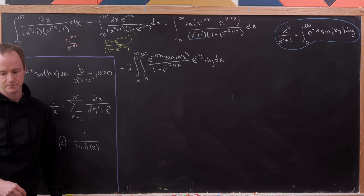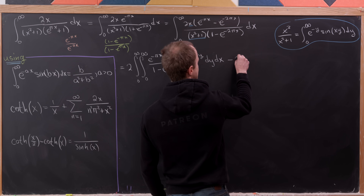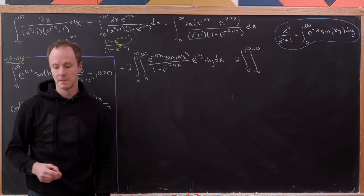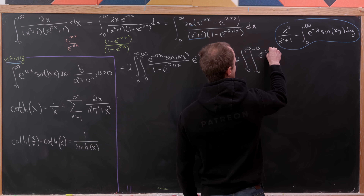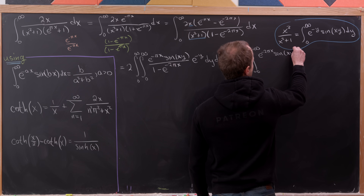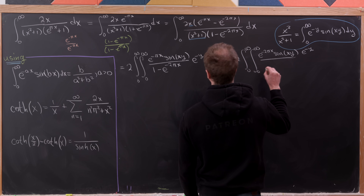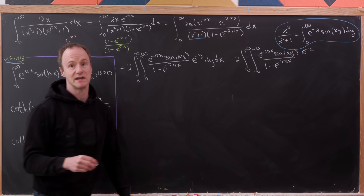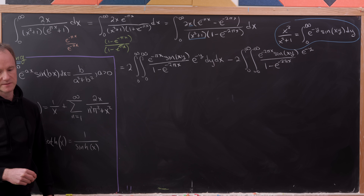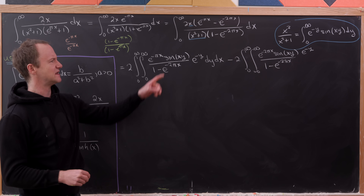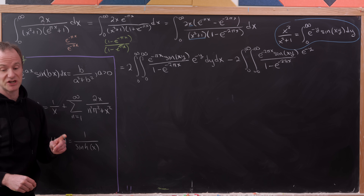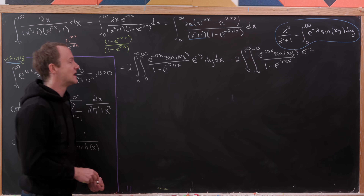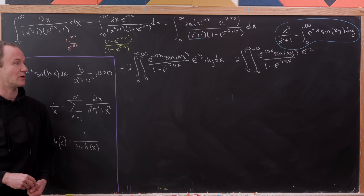The second piece is minus 2 times the double integral of e^{−y} sin(xy)·e^{−2πx} over (1 − e^{−2πx}) dy dx. Both denominators can be expanded via a geometric series with common ratio e^{−2πx}.